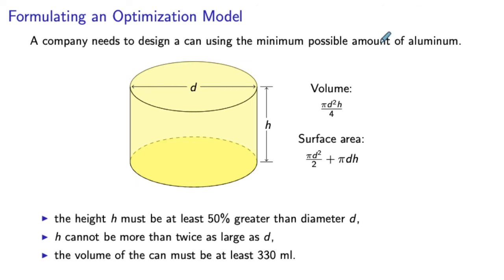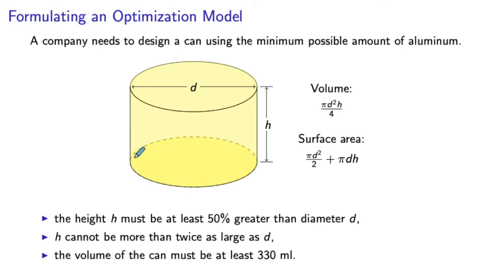Let's consider the following example. We have a company that needs to design a can using the minimum possible amount of aluminum — this could be a can for some soft drink. The can has a cylindrical shape, defined by two parameters: the height and the diameter. Using these two parameters, we can express the volume as pi*d² over 4, which is the area of the disk, multiplied by h, the height of the can.